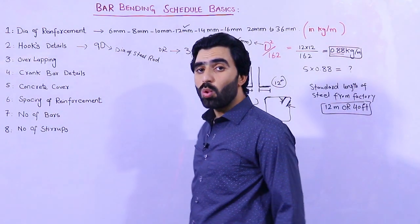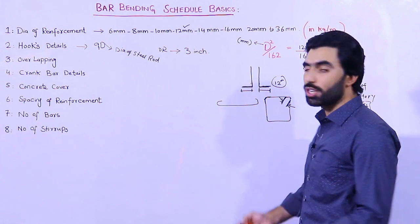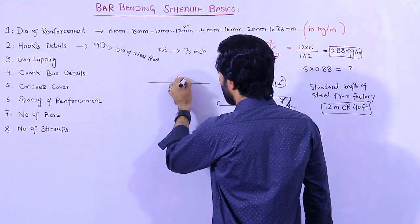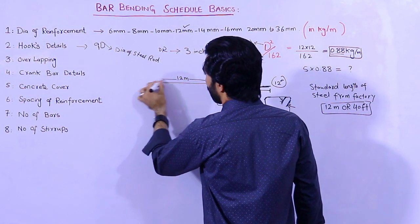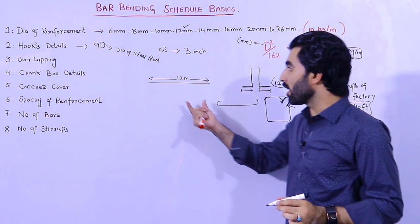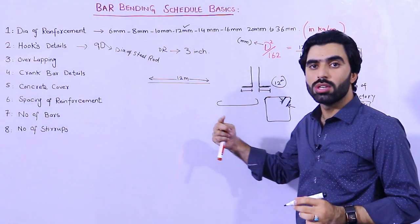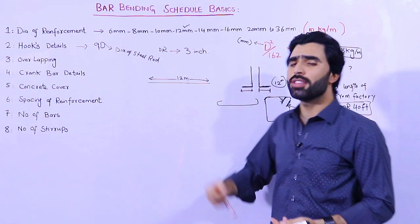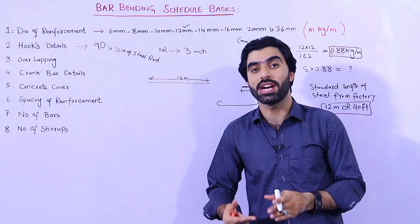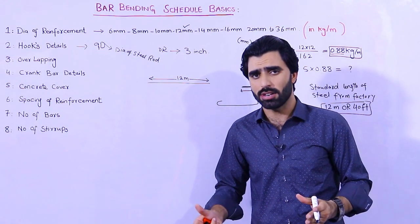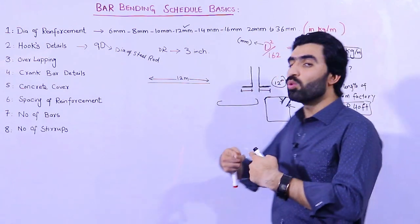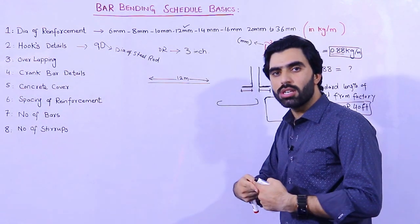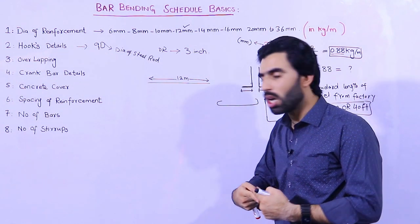The next topic is overlapping. We need to overlap one steel rod with another because from the factory the standard length is 12 meters. For insufficient length, we need to extend the steel rod — for example, if you require 16 meters in a slab or beam, you overlap one steel rod with another. That is called overlapping, attaching one steel rod with another to get the sufficient length.